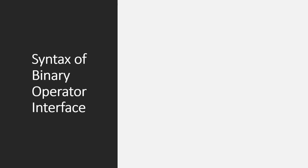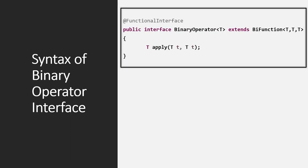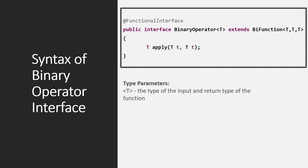Now let's understand the syntax of BinaryOperator. It is annotated with the @FunctionalInterface annotation. It extends the BiFunction interface and contains one abstract method — apply — which it inherits from BiFunction. From its method signature T apply(T, T), it is clear that it takes two input parameters and returns a result of the same type. So T is both the input type and the return type. It is defined as: public interface BinaryOperator<T> extends BiFunction<T, T, T>.